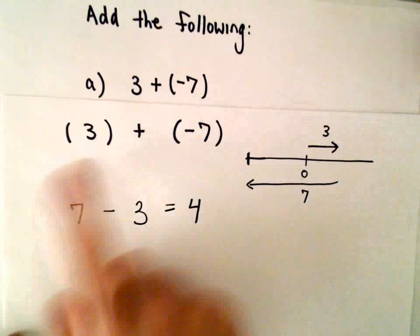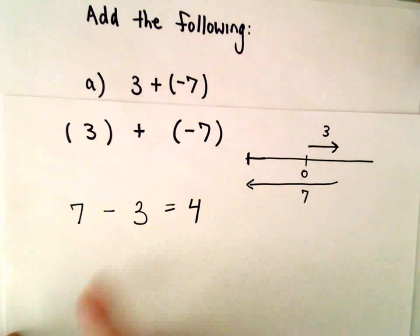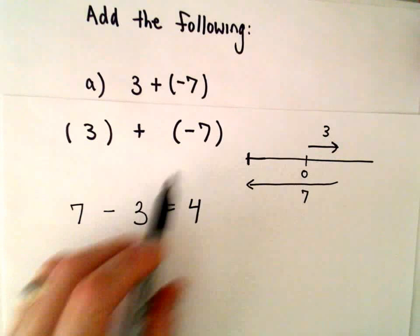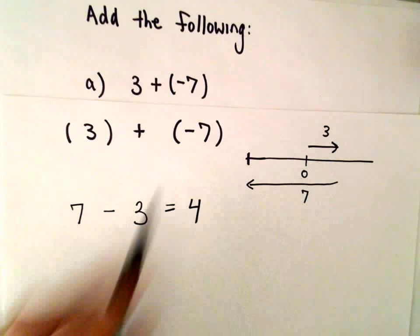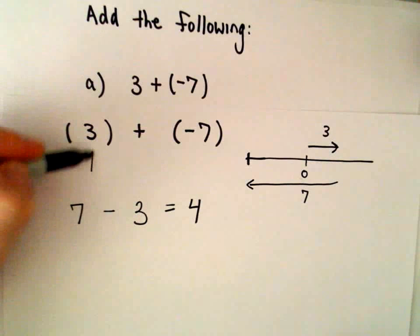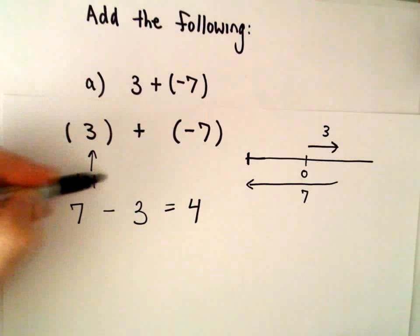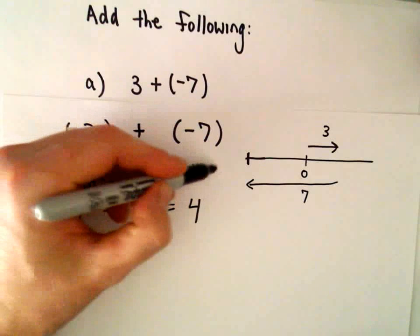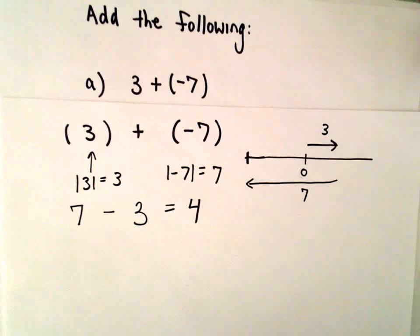But that's not the problem we have. This is how I think about it. I just pretend they're both positive, bigger minus smaller. Well, in this case though, the next thing I do is I look at each number and I think about the absolute value of them. The absolute value of 3 is 3, and the absolute value of negative 7 is positive 7.